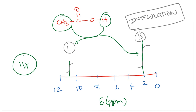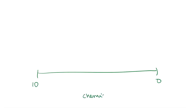Now let us spend a little time understanding what the various regions of the proton NMR spectrum look like. The important thing is that when I draw a scale from 0 to 10, this is chemical shift in ppm. Typically, we can divide this into three or four unequal regions.